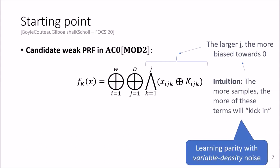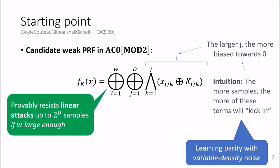And this candidate, if you write it in a different way, can also be viewed as learning parity with variable density noise, where you can think of the higher degree terms corresponding to the sparse noise.